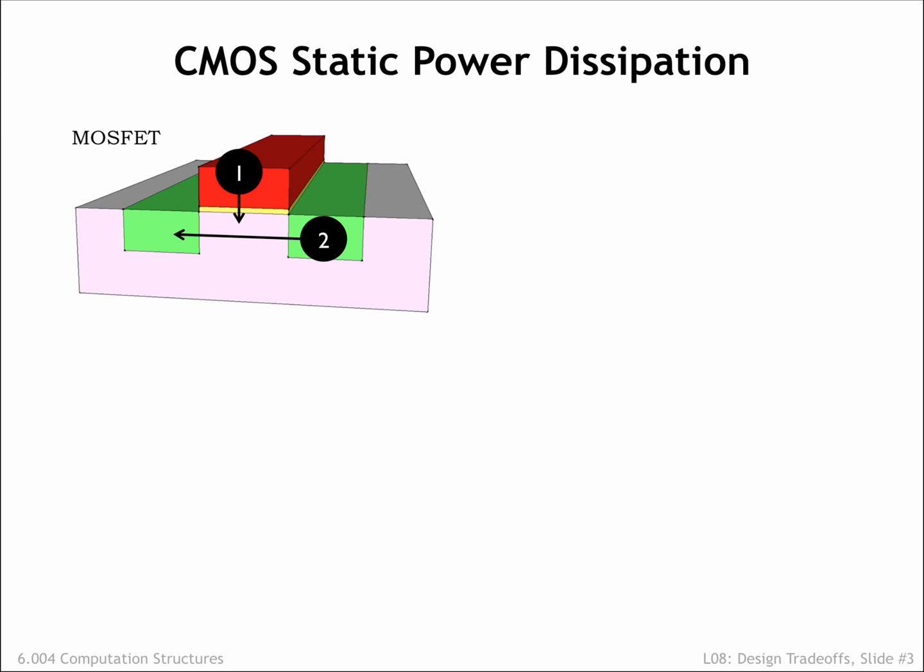Our first optimization topic is power dissipation, where the usual goal is to either meet a certain power budget or to minimize power consumption while meeting all the other design targets. In CMOS circuits there are several sources of power dissipation, some under our control, some not. Static power dissipation is power that is consumed even when the circuit is idle — in other words, no nodes are changing value. Using our simple switch model for the operation of MOSFETs, we'd expect CMOS circuits to have zero static power dissipation, and in the early days of CMOS we came pretty close to meeting that ideal. But as the physical dimensions of the MOSFET have shrunk and the operating voltages have been lowered, there are two sources of static power dissipation in MOSFETs that have begun to loom large.